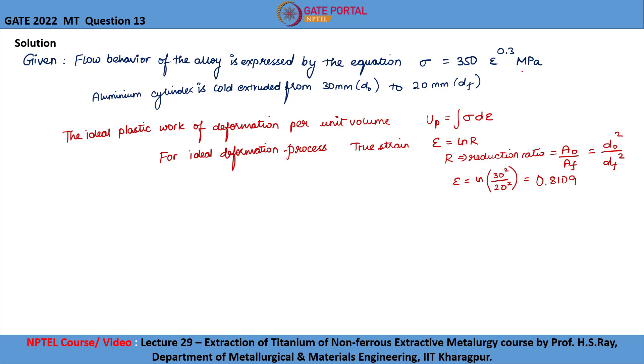We need to substitute the given flow stress equation into this equation. On substituting, we will be getting up equal to integral 350 epsilon power 0.3 d epsilon. As we know the true strain is 0.8109, the lower limit will be 0 and the upper limit will be 0.8109.